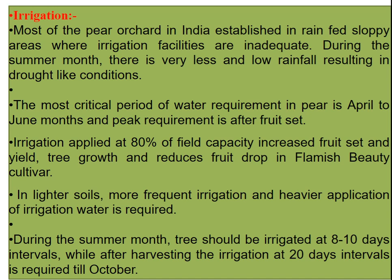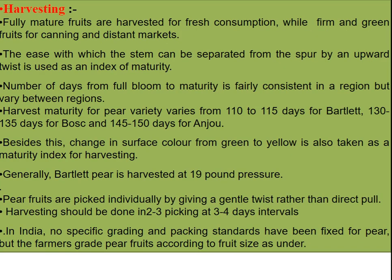Most pear orchards in India are established in rainfed slope areas where irrigation facilities are inadequate. During summer months there is very low rainfall resulting in drought-like conditions. The most critical period of water requirement is April to June, with peak requirement after fruit set. Irrigation applied at 80 percent of field capacity increases fruit set, yield, and tree growth, and reduces fruit drop in Flemish Beauty cultivar. In lighter soils, more frequent irrigations are required during summer months. Trees should be irrigated at 8 to 10 day intervals, and after harvesting at 20-day intervals till October.